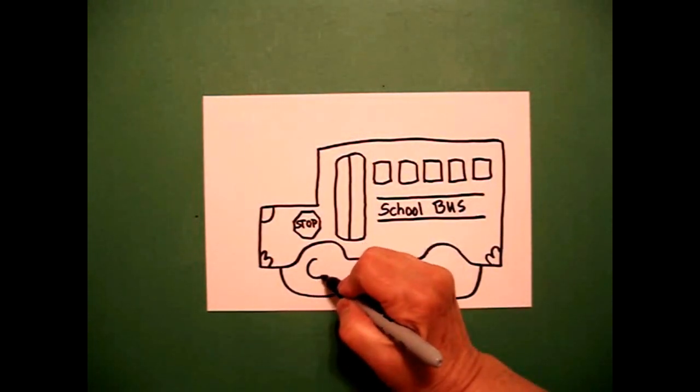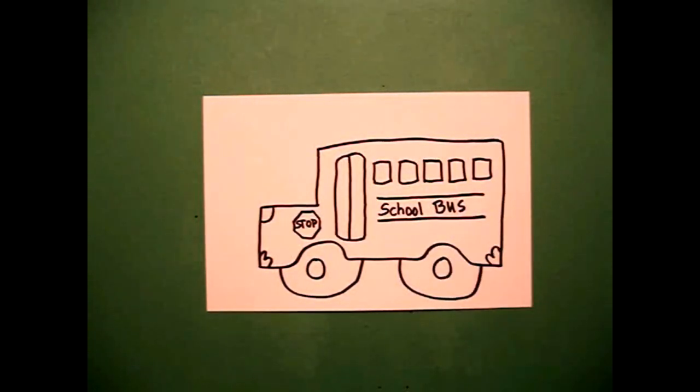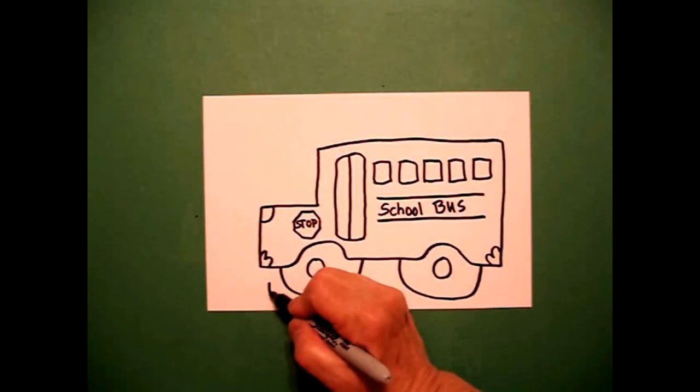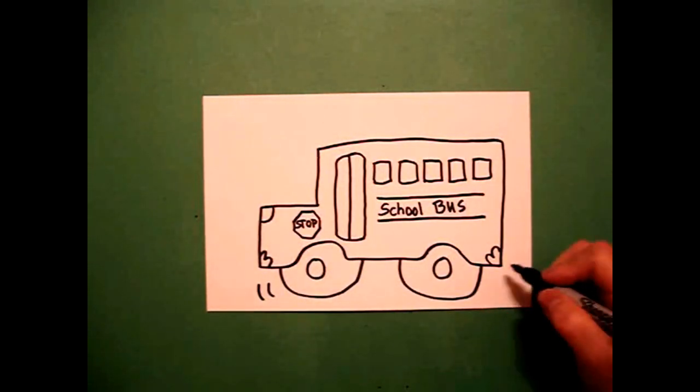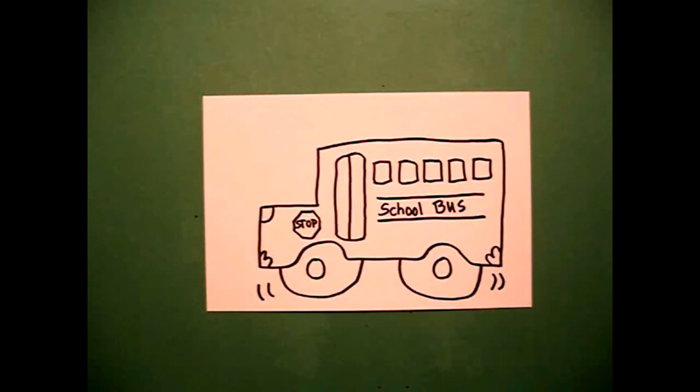I come down and draw one baby circle, two baby circles, and because I want my school bus to look like it's moving, I'm going to put two curved lines on the front, two curved lines on the back. Those are called animation lines.